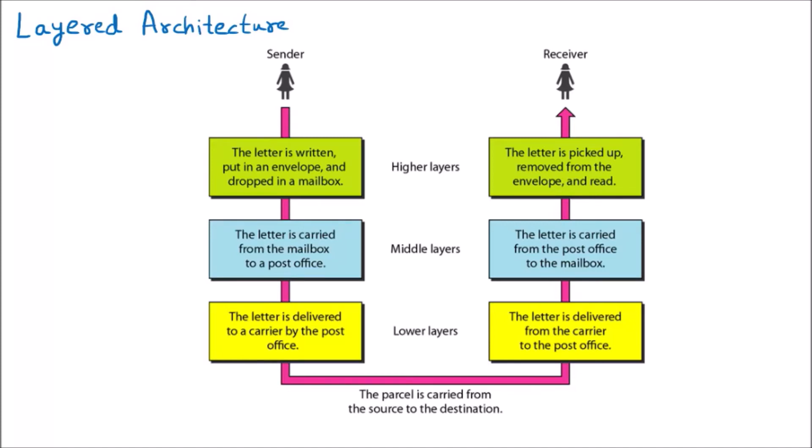Today we are discussing the layered architecture. We know that the OSI model and the TCP/IP model are based upon layers. The OSI model has seven layers, but what is the meaning — why are these layers required? That's why we are learning this topic: layered architecture.